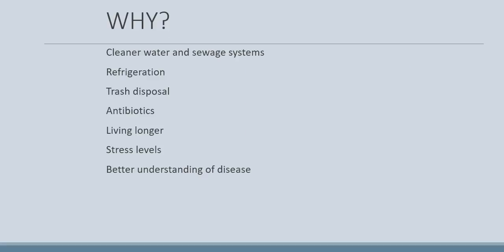Here are some reasons that caused communicable diseases to move down and chronic diseases to move up. The first is that we have cleaner water and sewage systems. In the early 1900s most people were on wells or had septic tanks, or they did not have septic tanks and just threw their waste into city streets, which caused lots of problems in spreading communicable diseases.